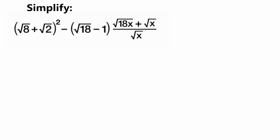The first thing I'm going to do is split this problem up into two different parts. So I'll take this as one part and this is another part. For now let's just focus on the first part. The first part has a plus in between these two terms in the parentheses and it's all getting squared.